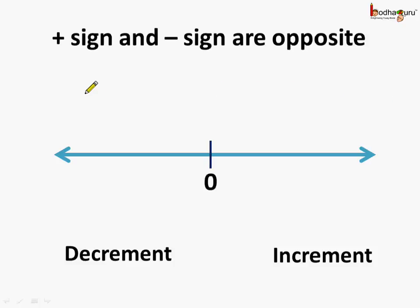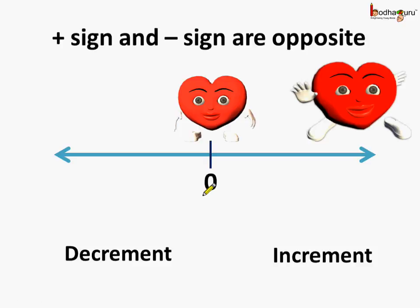Now we know plus sign and minus sign are opposite in nature. So if we draw a number line and here is the number 0, this is the normal heart of Ajay representing 0, and with the increase in positivity, the heart grew. So the positive value is increasing this side.